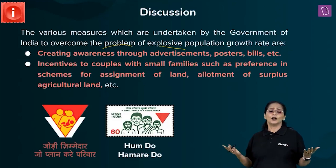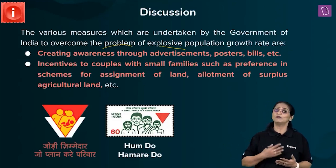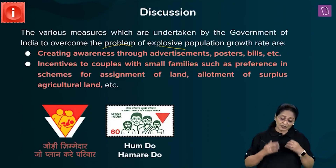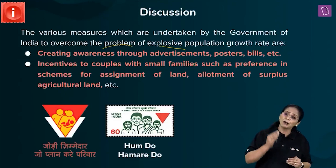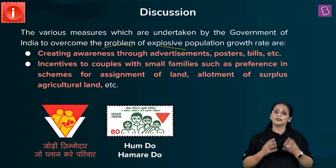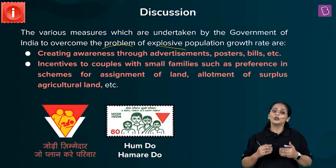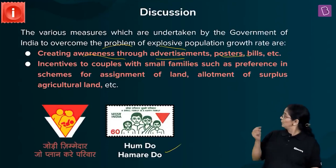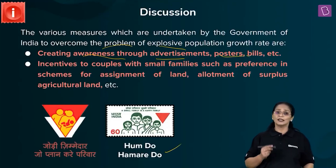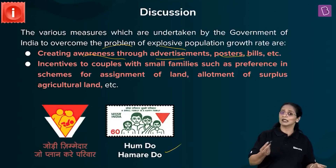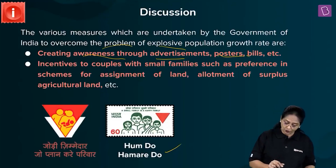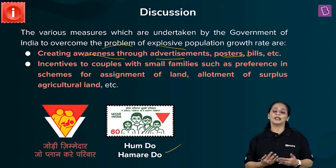At the time of independence, we were just about 350 million people, but now we've crossed the billion mark. The government has adopted various measures to ensure the public is aware of the importance of controlling population growth. They have created awareness through advertisements, posters, and bills — you can see slogans like 'Hum do, hum do' and 'Jodi zimadar, jo plan kare pariwar.' They have invested a lot through advertisements and posters to create awareness among the public.